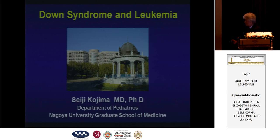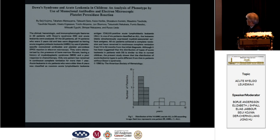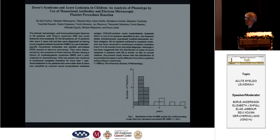Around 25 years ago, I reported all of the leukemia developed in Down syndrome patients younger than 3 years old — acute megakaryocytic leukemia. The relative risk of developing AMKL is around 500 times higher in Down syndrome patients compared to non-Down children.